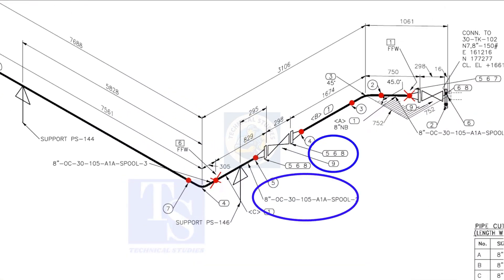In spool number 2, check what are items 5, 6, and 8. We already know item number 1 is pipe.